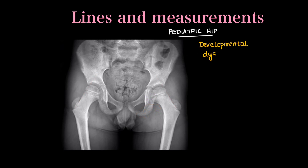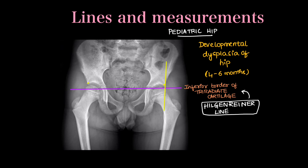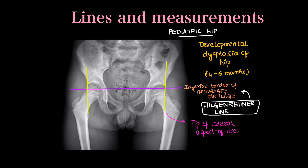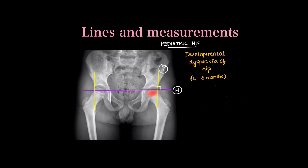Hilgenreiner's and Perkin's lines are drawn in cases of suspected developmental dysplasia of the hip in pediatric x-rays, typically in a 4–6 month old child. Hilgenreiner's line is drawn along the inferior aspect of the bilateral tri-radiate cartilages. Perkin's line is drawn perpendicular to Hilgenreiner's line passing through the tip of the lateral aspect of the acetabulum. These two lines are thus perpendicular to each other, creating four quadrants around each hip.